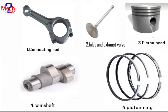Seven, inlet and exhaust valves. Valves are commonly mushroom-shaped poppet type. They are provided either on the cylinder head or on the side of the cylinder, for regulating the charge coming into the cylinder via the inlet valve, and for discharging the products of combustion via the exhaust valve, from the cylinder.